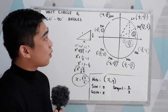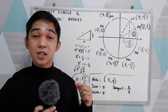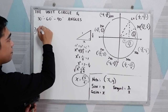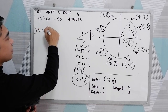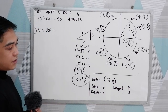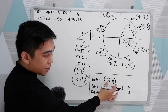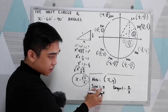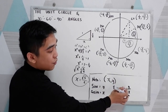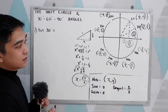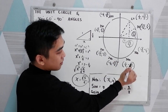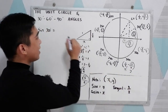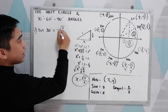Now, how are we going to apply this to 30, 60, 90? Let's say you need to find sine 300 degrees. Take note: in our coordinate, x indicates our cosine, y indicates our sine, and tangent is y over x. For sine 300 degrees, locate 300 degrees — x and y. Sine is y, so that is negative square root of three over two.